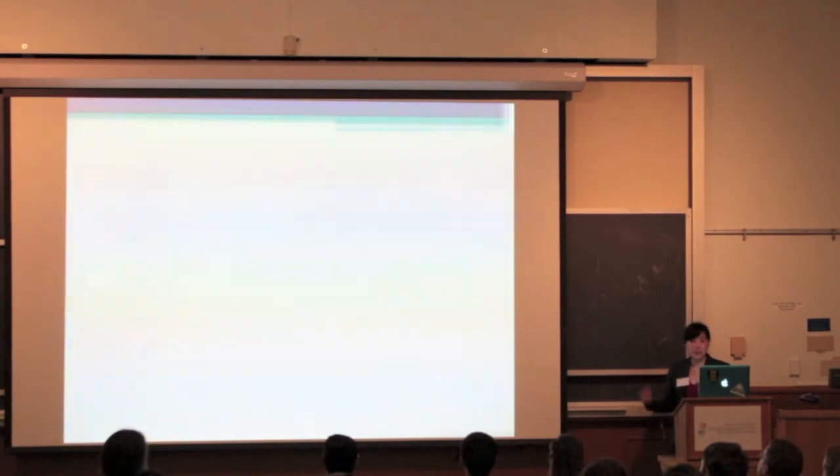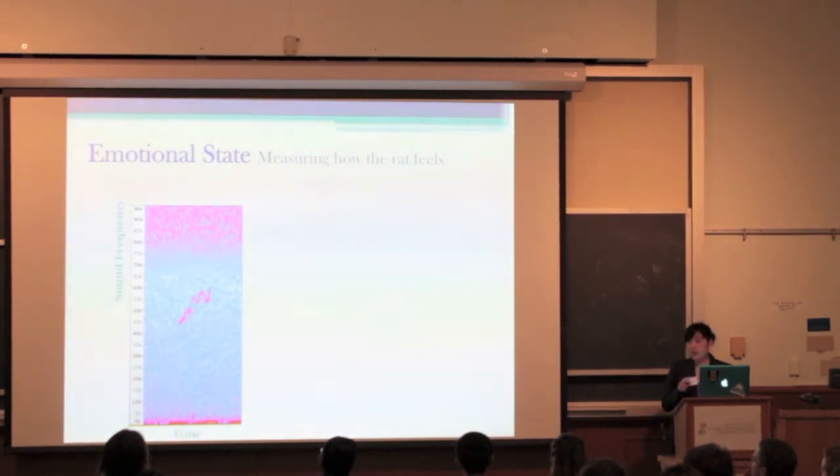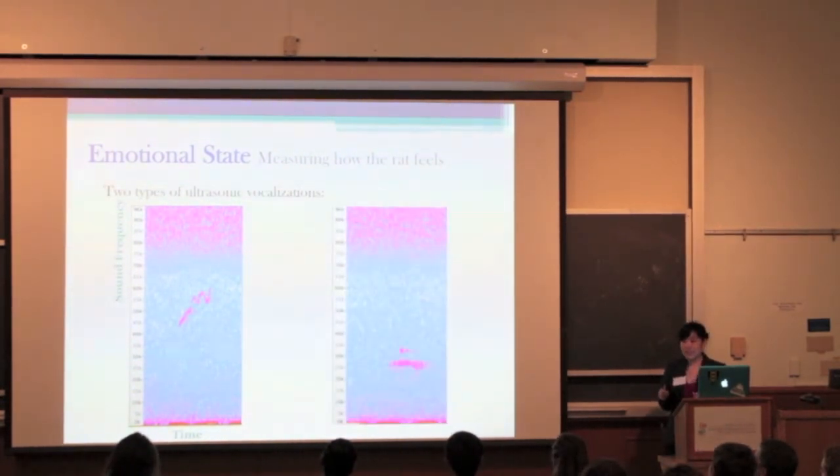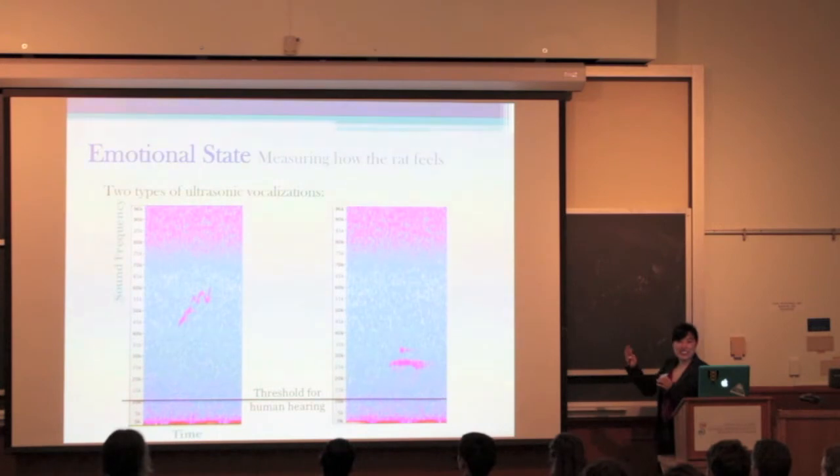So, another method we can use to explore the question is to look at the emotional state of the rat. To do that, we used spectrographs, an example of which you can see here. There is sound frequency on the y-axis and time on the x-axis. The bright pink is the rat's ultrasonic vocalization. There are two types of ultrasonic vocalizations, as you can see here. And as a gauge, this is the threshold for human hearing. You can clearly see that these bright pink blotches, or beautiful figures and structures, are clearly above what we can physically hear.